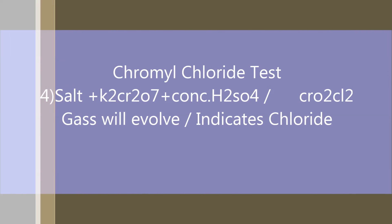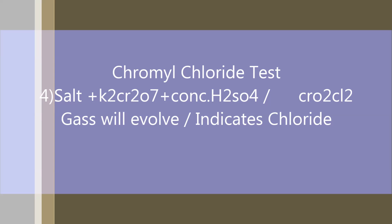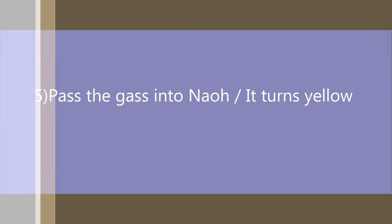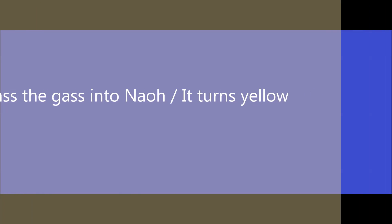The fourth one is the chromyl chloride test. We experiment with salt plus K₂Cr₂O₇ plus concentrated H₂SO₄. We observe that CrO₂Cl₂ gas evolves, indicating chloride. We then pass that gas into NaOH and observe that it turns yellow.